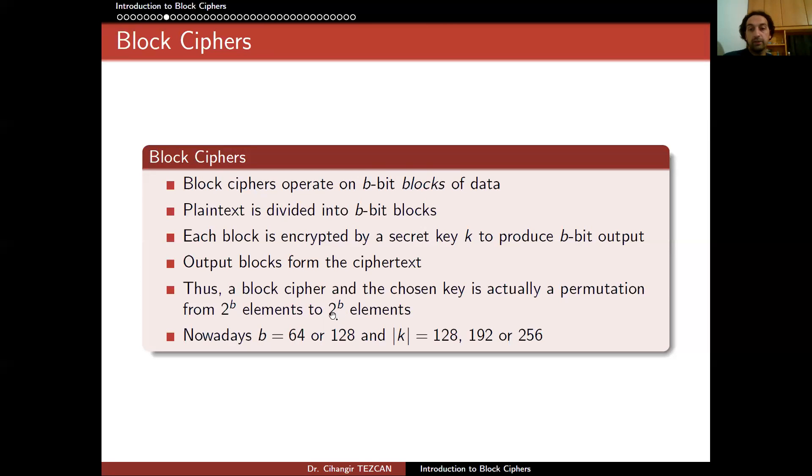So a block cipher and the chosen key is actually a permutation from 2 to the b elements to the 2 to the b elements. And generally as the key size, we are using 128, 192 or 256 bits depending on the security you want. For personal use, we know that this much key material is enough for current technology. And for military use, we suggest 256 bits of secret key.